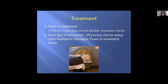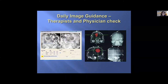Prior to treatment, the physics team performs several quality assurance checks. On the first day of treatment, the physician checks setup with the radiation therapist team in the treatment room. The physician checks daily images for setup alignment — verifying correct positioning using overlaid planning CT images or side-by-side comparisons — though the actual tumor is not visible until an MRI is done after completion of therapy.